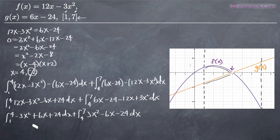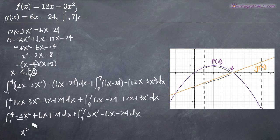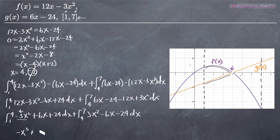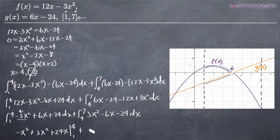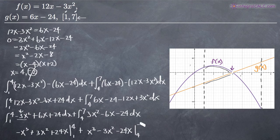Now we integrate. Adding 1 to the exponent and dividing the coefficient by the new exponent: −3x² integrates to −x³, 6x integrates to 3x², and 24 integrates to 24x. So the first antiderivative evaluated from 1 to 4 is [−x³ + 3x² + 24x]. Similarly, the second antiderivative evaluated from 4 to 7 is [x³ − 3x² − 24x].